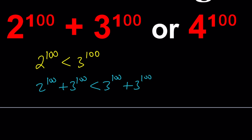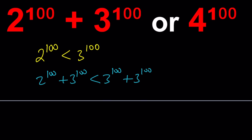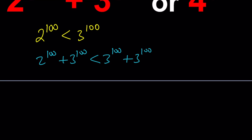How can we turn the right hand side to 4 to the power 100, or turn it into something we can compare to 4 to the power 100? Notice that this expression on the right hand side can be written as 2 times 3 to the power 100. Now we're going to go ahead and work on this expression until we are ready to compare it to 4 to the power 100.